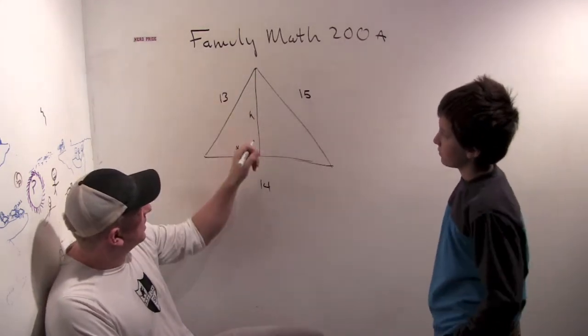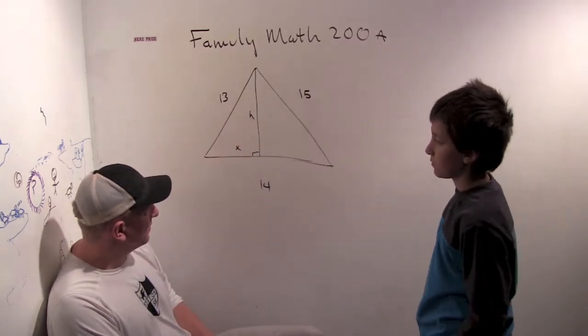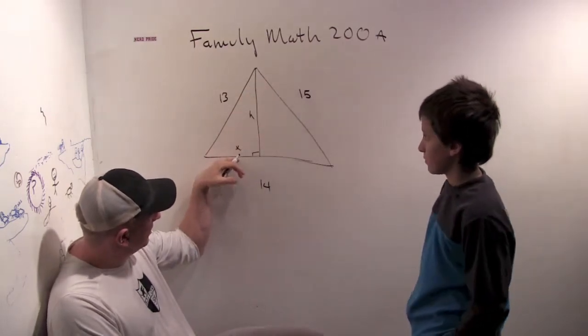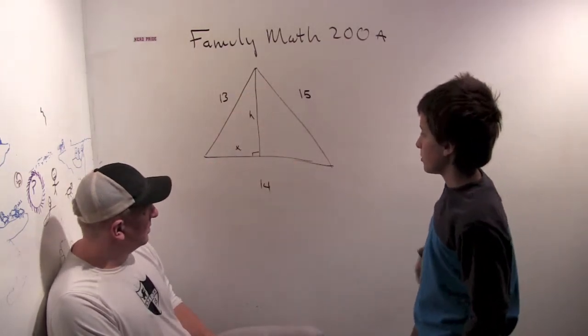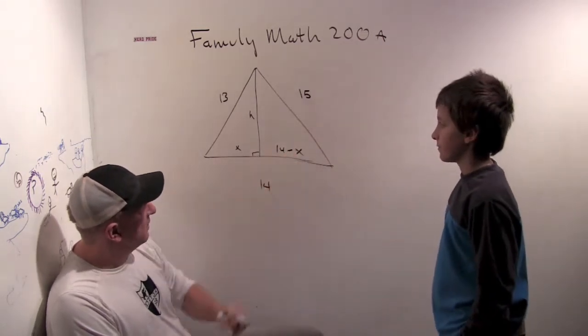We're going to do it by dropping a perpendicular to the side whose length is 14. So if I call that height h and this bit over here x, what's this other part over here? Well, this is 14 minus x.